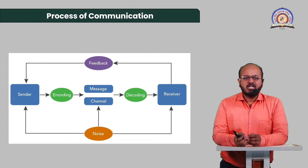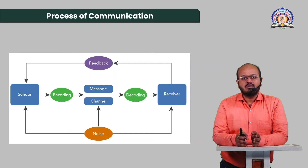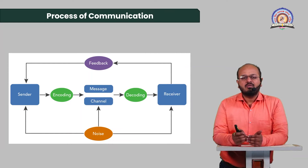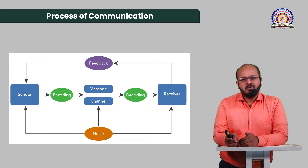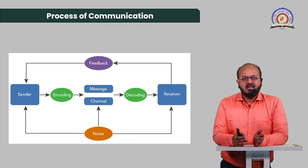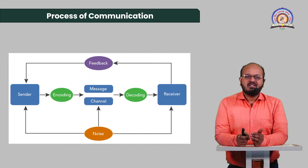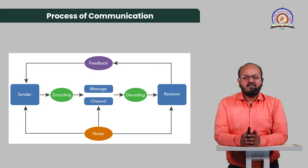After encoding, the channel or medium is decided — by which channel the sender will communicate. The channel can be written communication, whether sent by post, handwritten, WhatsApp, email, newspaper, magazine, blog, or internet website. The sender decides which channel the message has to be conveyed through.